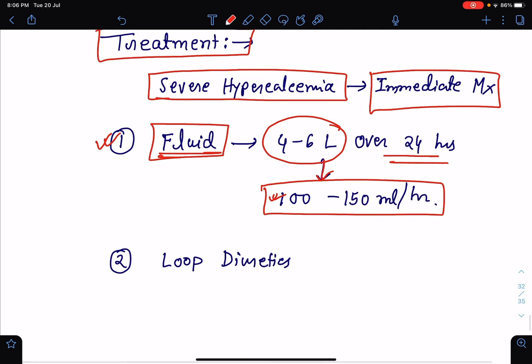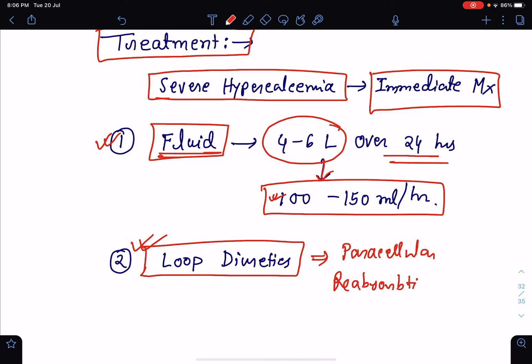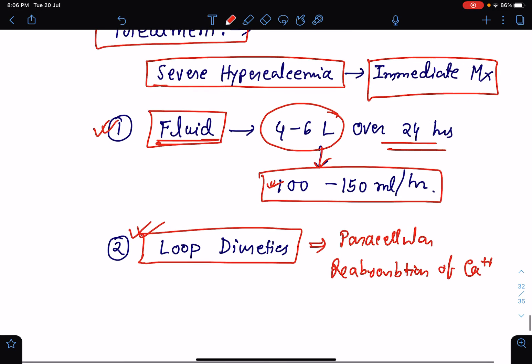With the fluid administration, if the patient develops volume overload and the hypercalcemia is still persisting, then we can use loop diuretics. Loop diuretics prevent the paracellular reabsorption of calcium. This is how it can lower the calcium level.